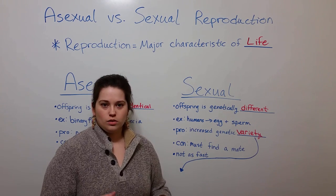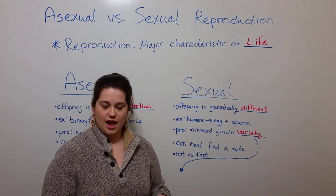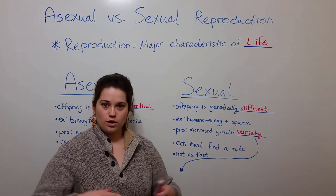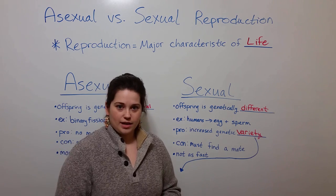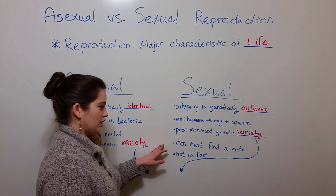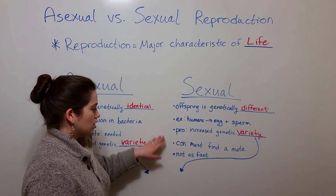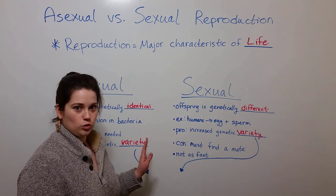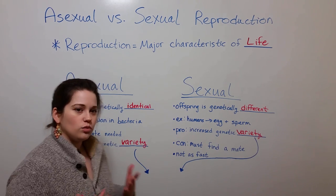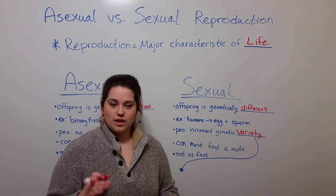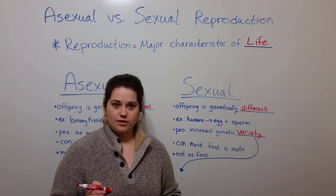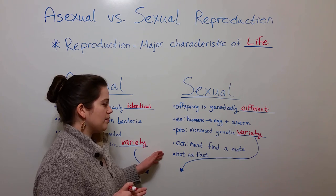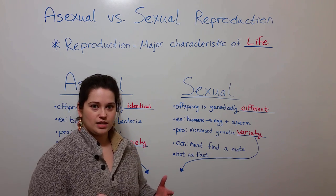A con of sexual reproduction is that an individual must find a mate. This can be difficult for populations that have a low number of individuals or where the individuals are very widespread. Also, sexual reproduction is not as fast as asexual reproduction in most cases. The generation time is the time between consecutive generations, and for organisms that reproduce sexually, the generation time is typically longer.